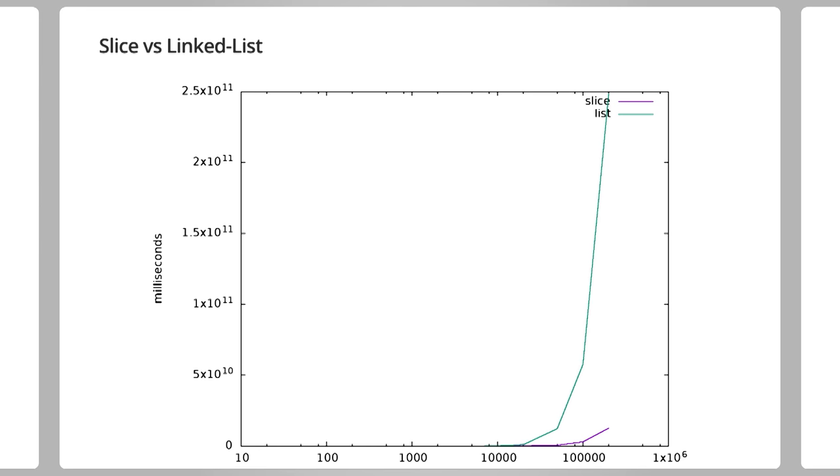Now, this is obviously an artificial example. But this does happen in practice. Algorithms with faster theoretical numbers are drowned out by the constant factors due to all the pointer chasing and the poor use of cache.